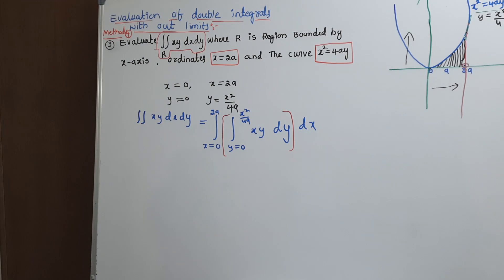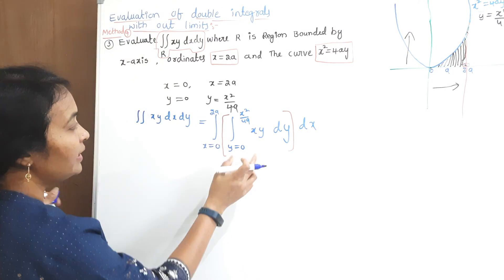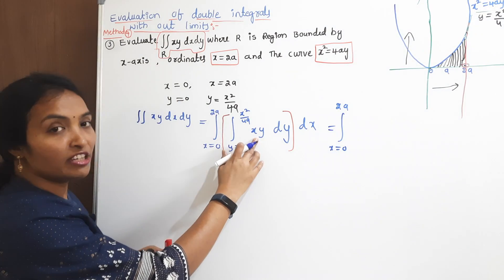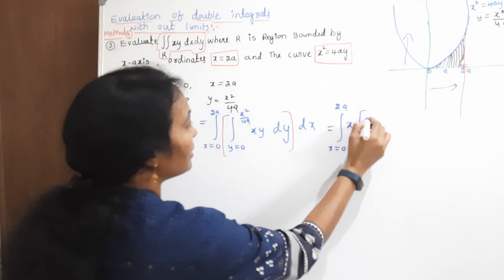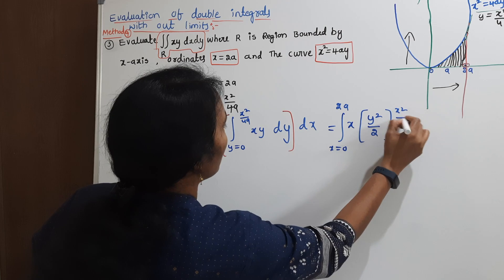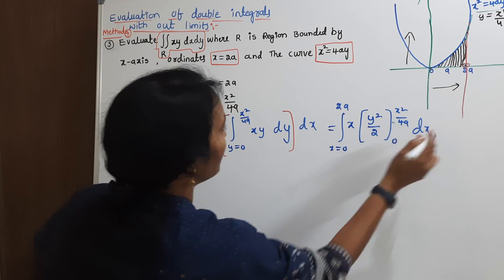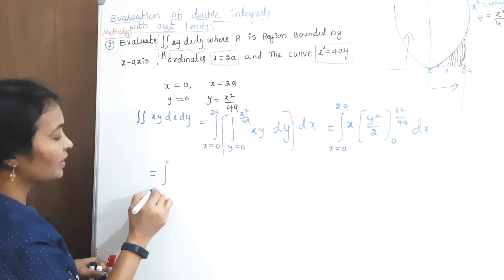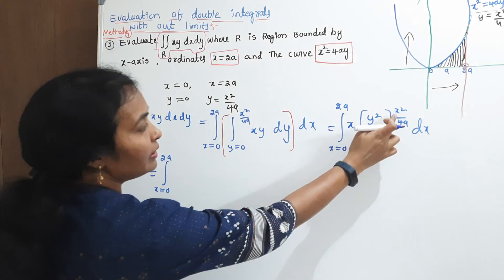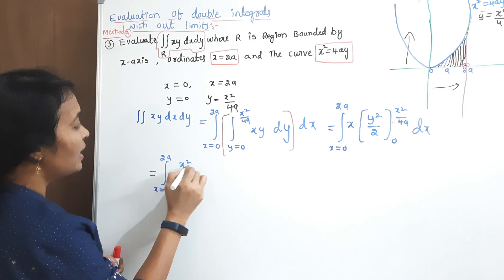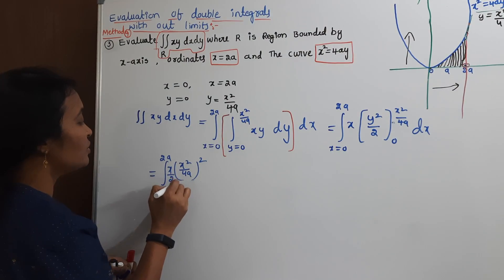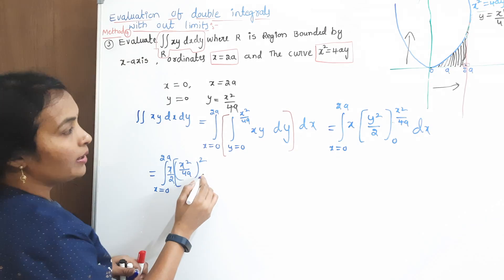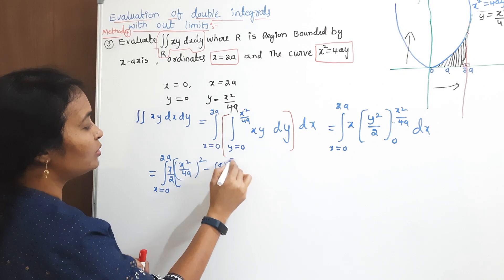Integrating with respect to y: x limits are 0 to 2a. Since integrating with respect to y, the x term is constant and can be taken out. Integrating the y term gives y²/2, evaluated from 0 to x²/4a, then multiplied by dx. Substituting the upper limit y = x²/4a gives (x²/4a)² divided by 2.